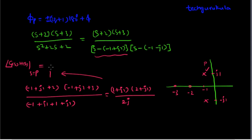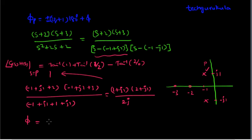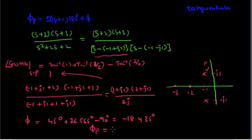From this expression we calculate the angle phi as: arctan(1/1) plus arctan(1/2) minus arctan(2/0). This gives 45 degrees plus 26.565 degrees minus 90 degrees, which equals minus 18.435 degrees. Then the angle of departure phi_P equals 180 degrees plus phi, which is 180 degrees minus 18.435 degrees, giving phi_P equal to 161.565 degrees.